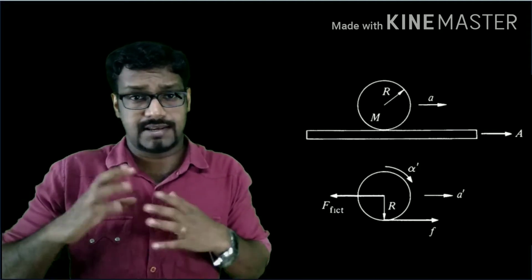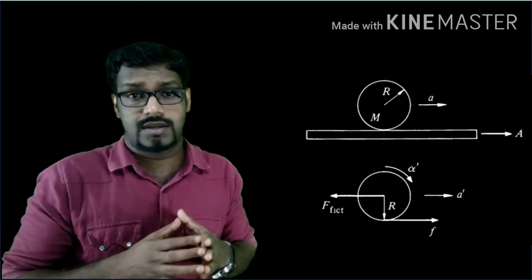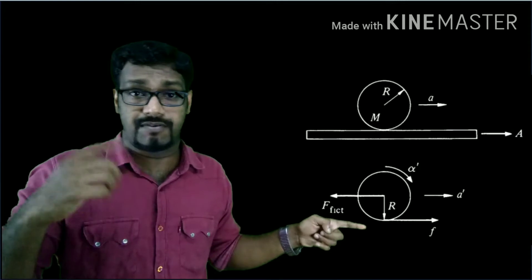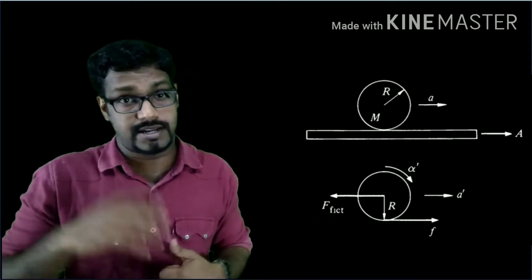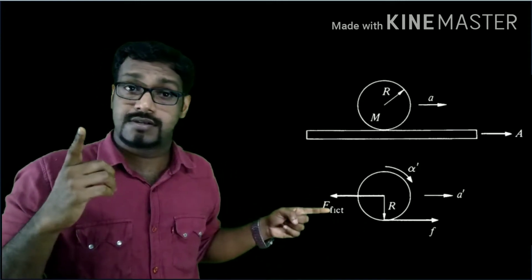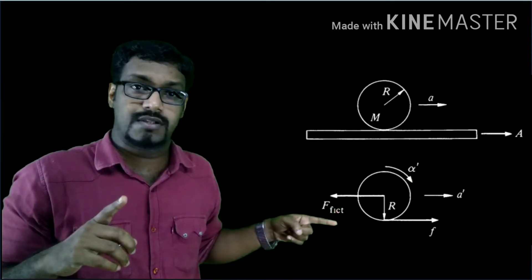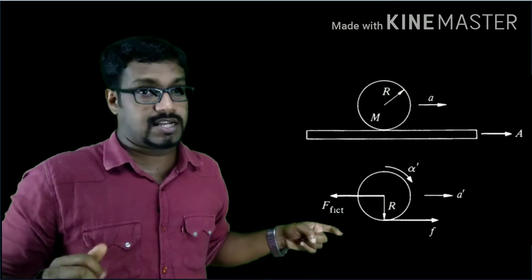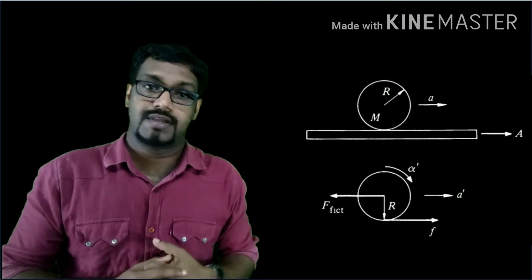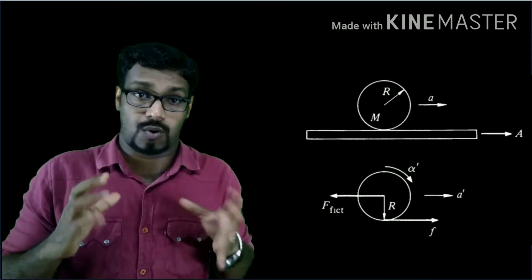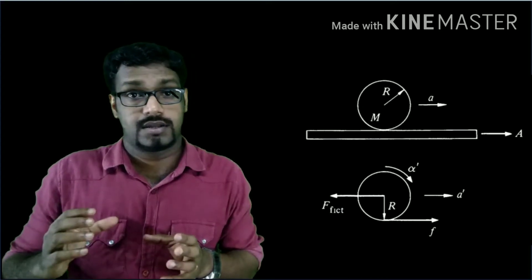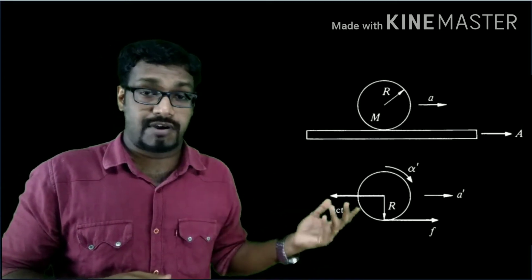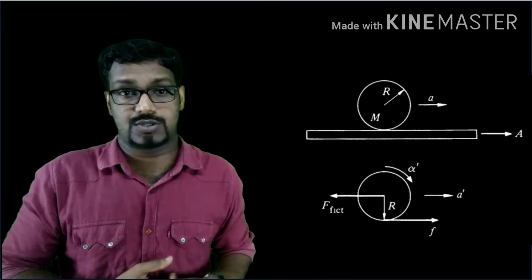When you observe from a frame of reference which is attached to the plank, you would measure an acceleration A'. We will find its direction later. A' is the acceleration of the cylinder when observed from the frame of reference attached to the plank, which is accelerating with capital A. The cylinder is also rolling, so along with the linear acceleration it has some angular acceleration, which we call alpha prime, measured from the frame of reference attached to the plank or car.